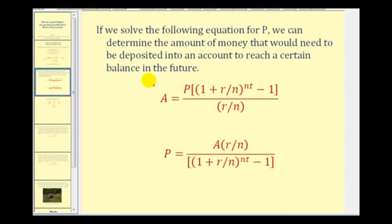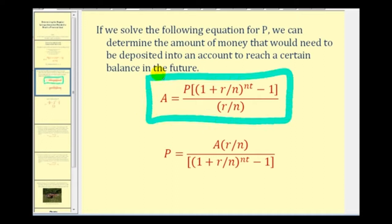If we solve the formula here, you should determine the value of an annuity A for the value P, where P is the regular deposit amount. We would have this formula here where P will give us the regular savings amount needed to reach our financial goal of A. Let's quickly show how we can solve this equation for P.